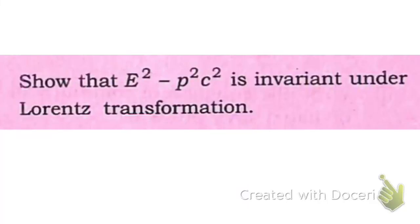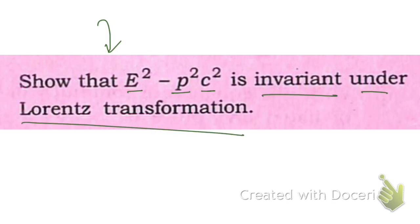Hello friends, in this video I'm going to show you that E squared minus p squared c squared is invariant under Lorentz transformation. Before we start, please do subscribe to the channel, hit the thumbs up button, and share with your friends.